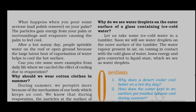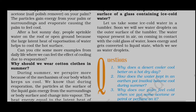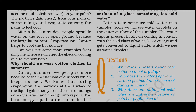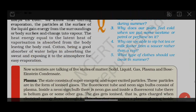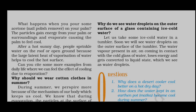Why do we see water droplets on the outer surface of a glass container holding ice cold water? If we keep ice cold water in a glass, we will see water droplets on the outer surface of the tumbler. The water vapor present in the air, on coming in contact with the cold glass, loses energy and gets converted into liquid state, which we see as water droplets. The water in the atmosphere is already a gas; it comes in contact with the tumbler and cools, forming droplets.